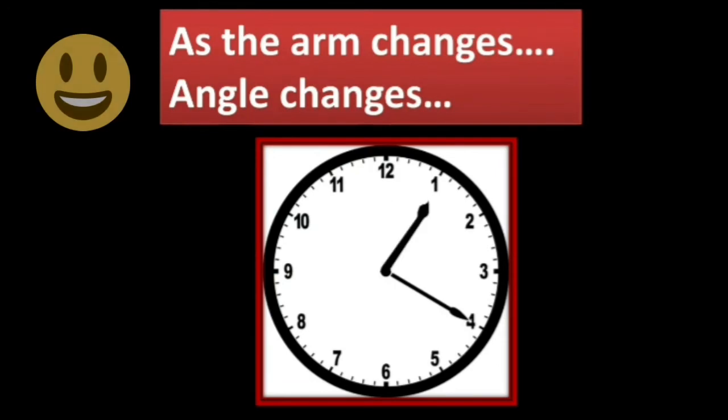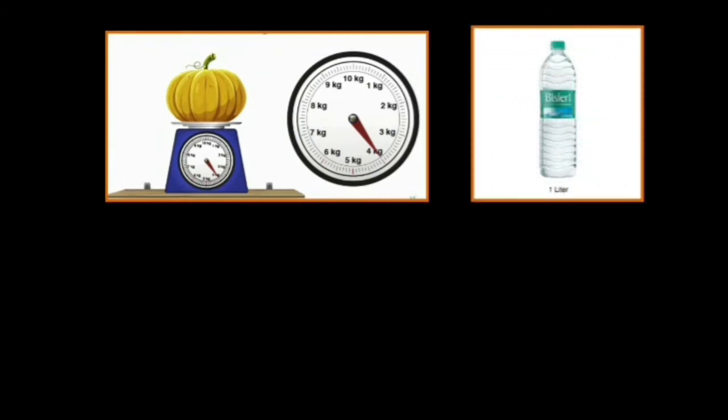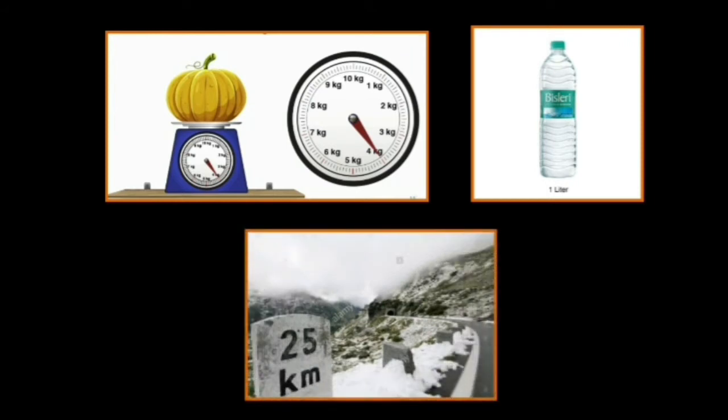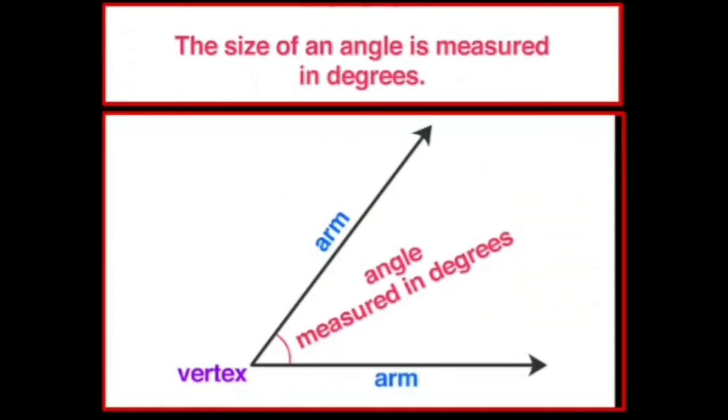Let us see the measurement of an angle. As you know, the mass of an object is measured in kilograms. The volume is measured in liters. And the length is measured in kilometers. These are different units to measure different things. Angles are measured in units called degrees. We denote this unit as degree.